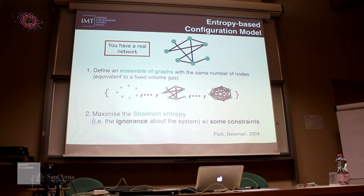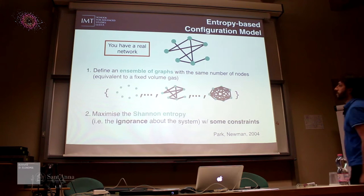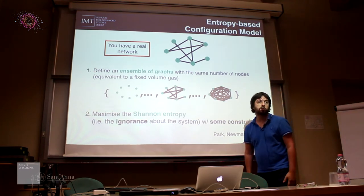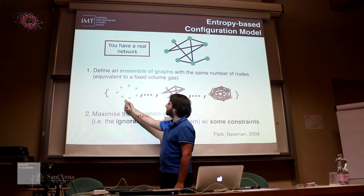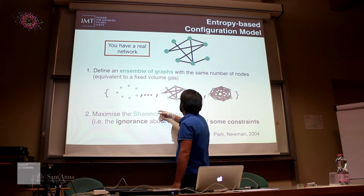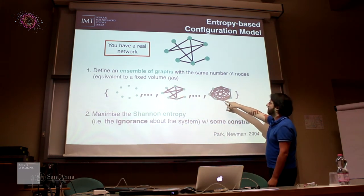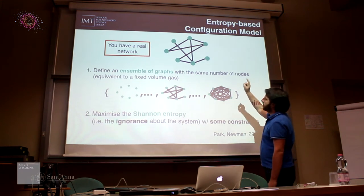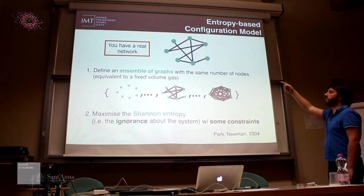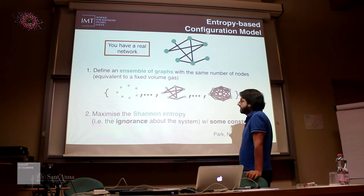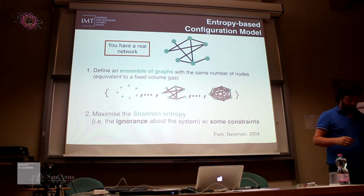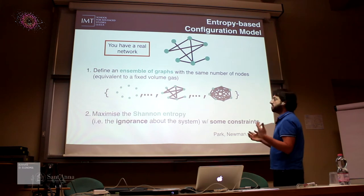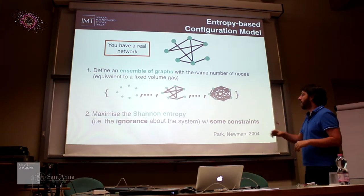This is how the study goes. You start with a real network — here is just a sketch — and you define an ensemble of graphs, as in statistical mechanics. This ensemble of graphs is made from the empty network, so just isolated nodes, to all possible numbers of links up to the fully connected network. In this ensemble, you have even the real network. Then you define the Shannon entropy of the system, which takes into account the ignorance you have about the whole thing, up to some constraints.